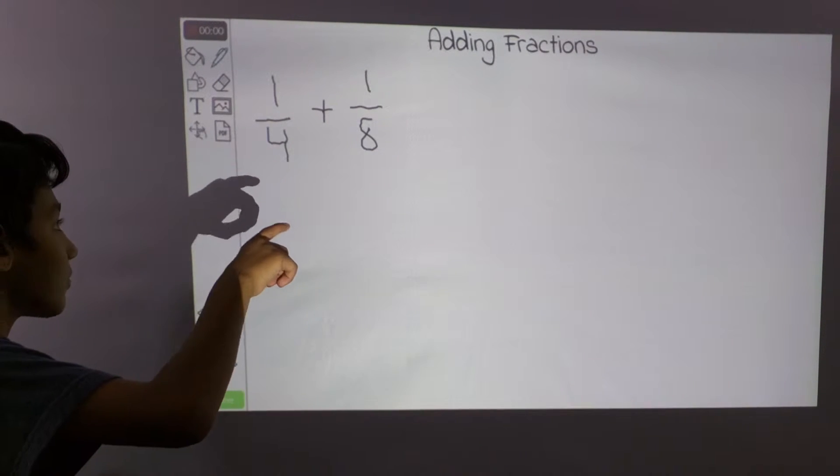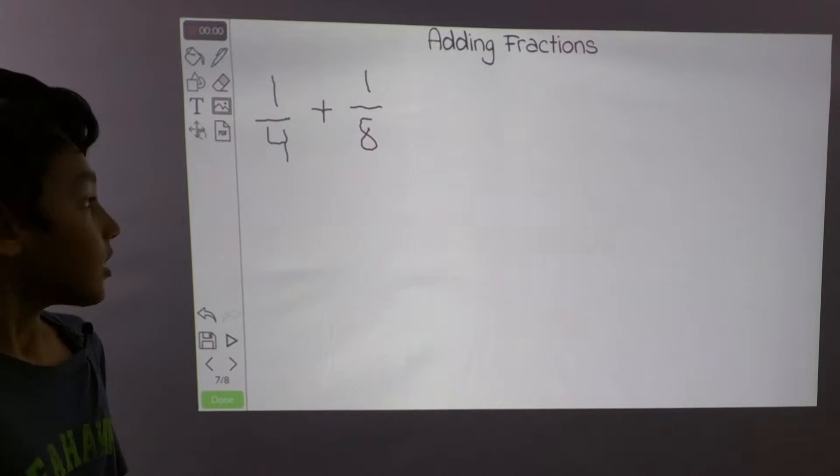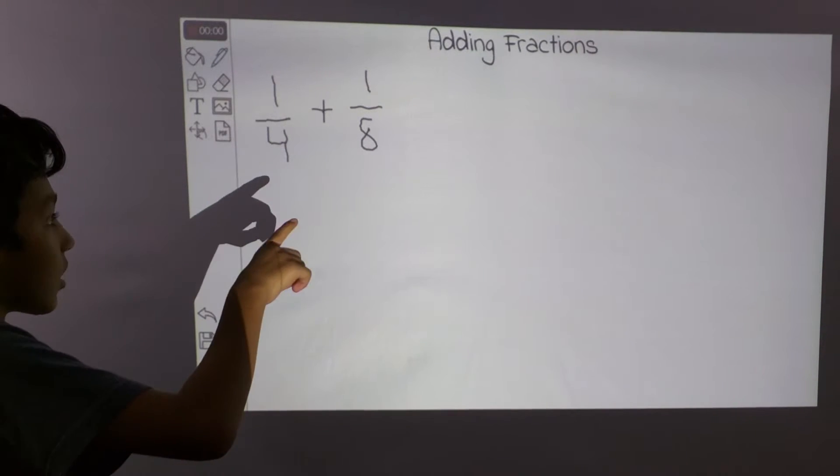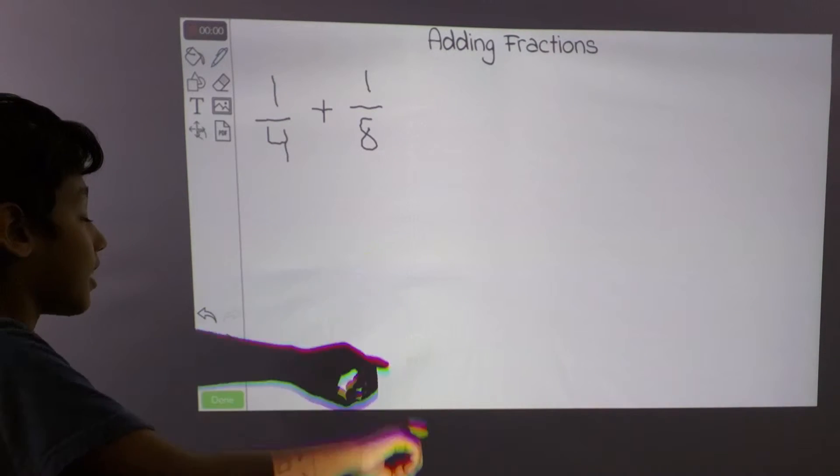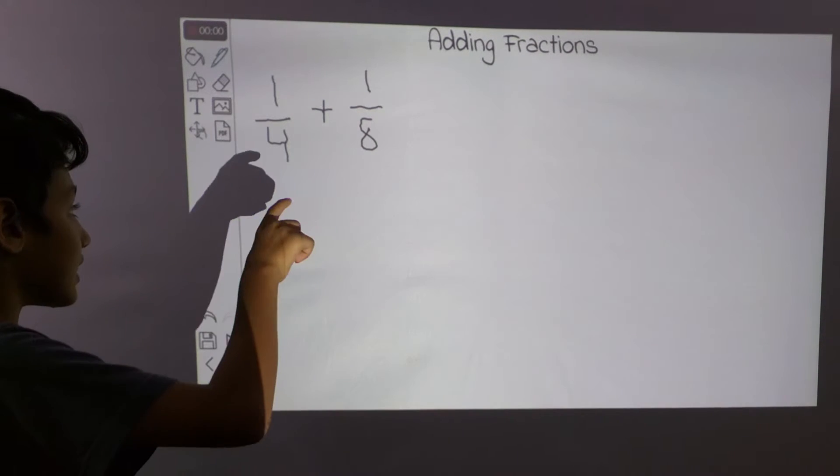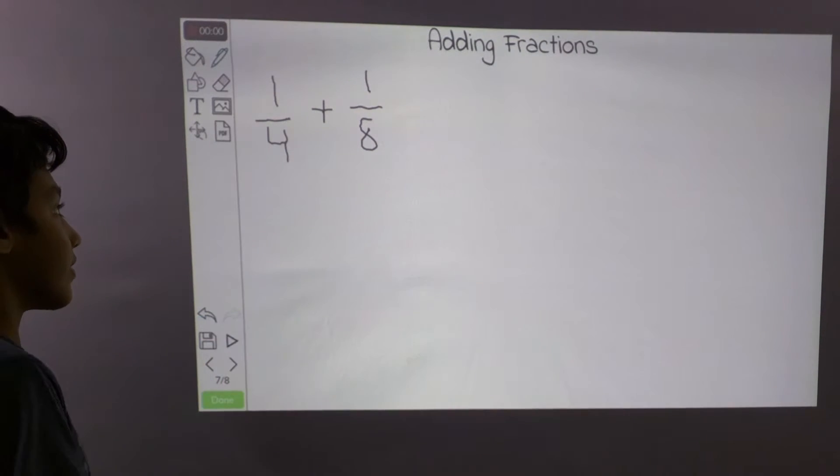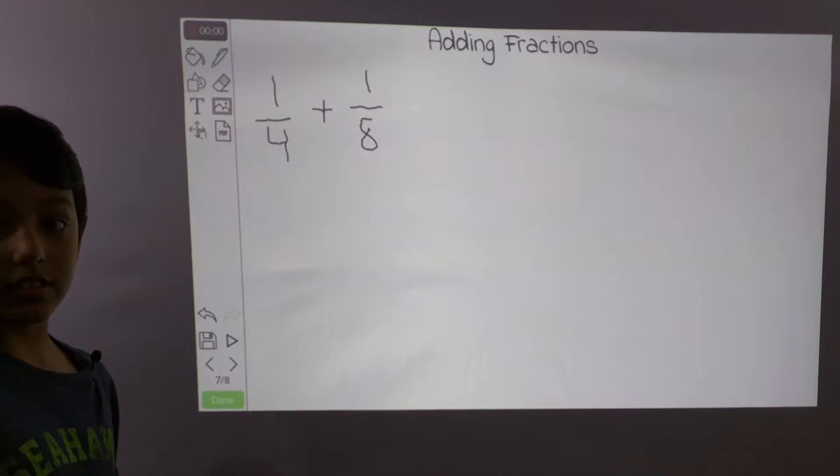So now we have 1 over 4 plus 1 over 8. So like the last problem, the denominators have to be the same. But this time they're not. So the easiest way is to look at the big denominator and see if this one goes into that one. So right now it does, because 4 times 2 is 8.